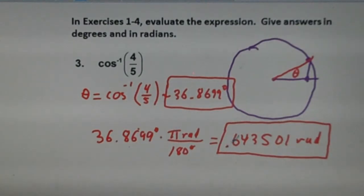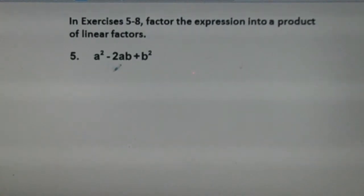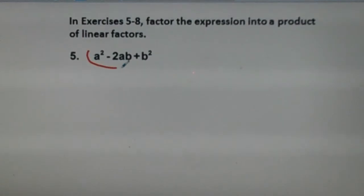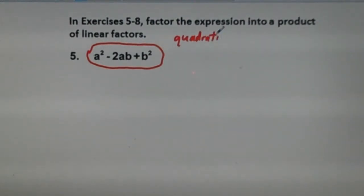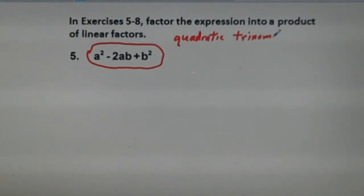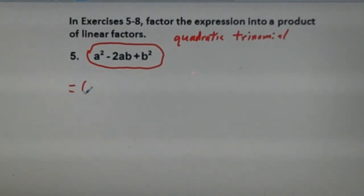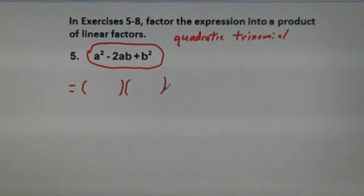We're going on to our next odd number problem, which is problem number 5: factor the expression into a product of linear factors. We have a quadratic trinomial because of the power of two. Usually we want to factor quadratic trinomials into two linear binomials.